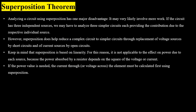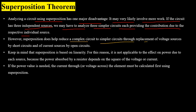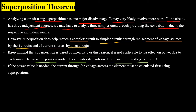Analyzing a circuit using superposition has the disadvantage of involving more work. For example, if a circuit has three independent sources, we must create three simpler circuits for each source's contribution. However, superposition also helps reduce a complex circuit into simpler ones by replacing voltage sources with short circuits and current sources with open circuits. Since superposition is based on linearity, it is not applicable to power calculations, because power absorbed by a resistor depends on the square of voltage or current. If power is needed, the current through or voltage across the element must first be calculated using superposition, then power is computed.